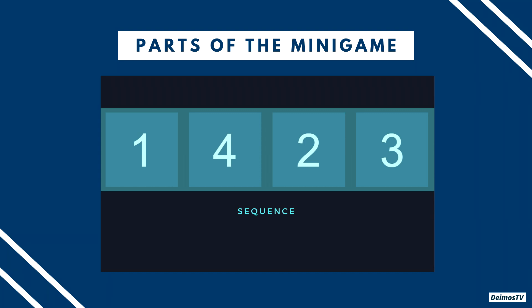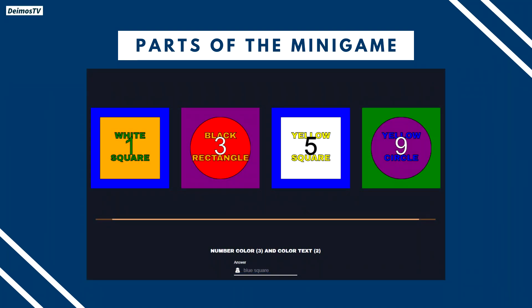So now let's proceed to the test. Don't worry, this is not timed and you may take all the time you need to identify the required elements. The sequence is 1, 4, 2, 3. You don't need to remember the numbers seen on the puzzles as they're just meant to mess with your mind. We have to find the number color of 3 and the color text of 2. So which one among these puzzles is number 3? That's going to be the one on the right — and the number color of it is white. Next, the color text of 2 is the one to the left of number 3, and that's yellow. So the answer for this minigame is 'white yellow.' Make sure to add a space to separate your answers for the first and second required elements.